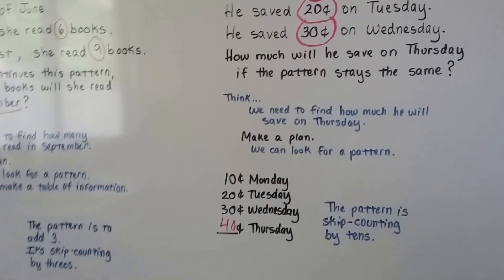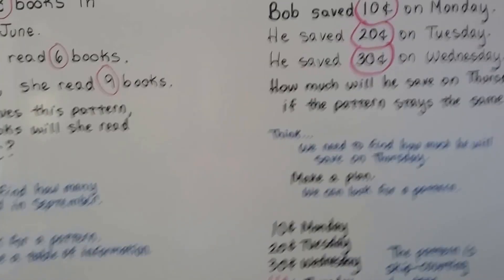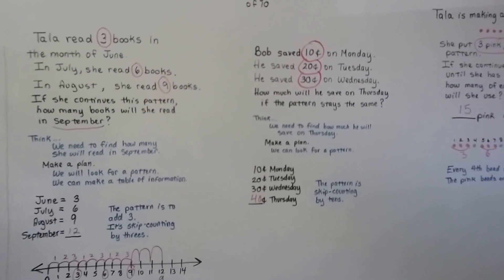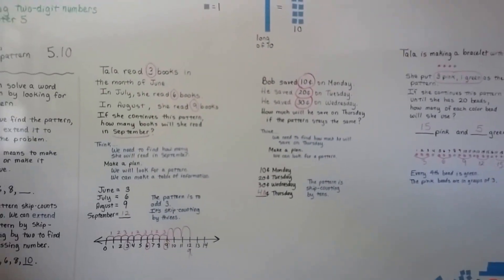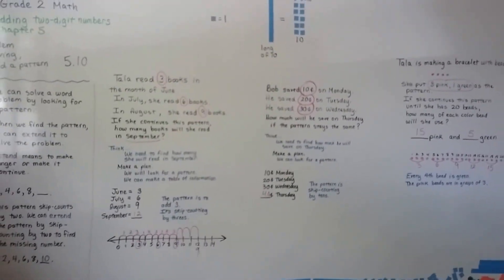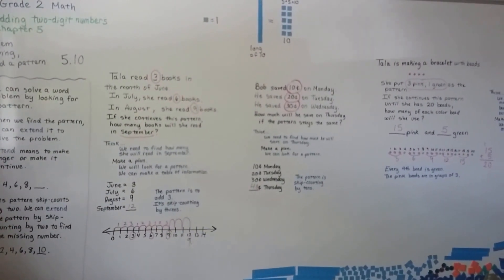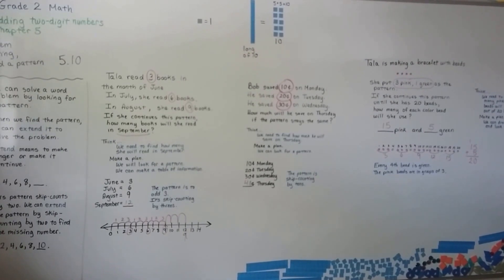We can make a table, we can use a number line, we can look for a pattern — and that will help us solve word problems. We're going to continue talking about adding 2-digit numbers in this chapter. See you next video. Bye!